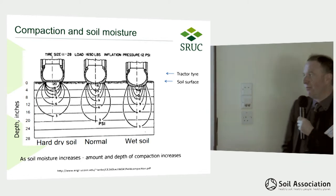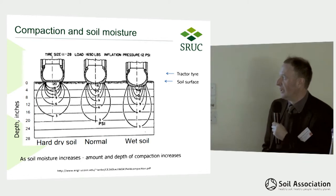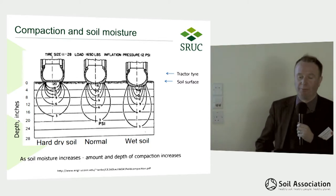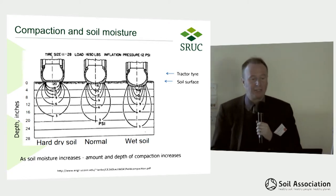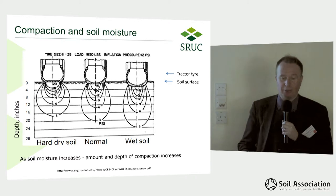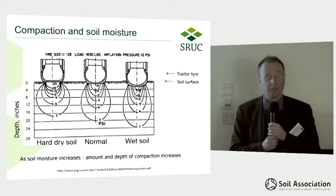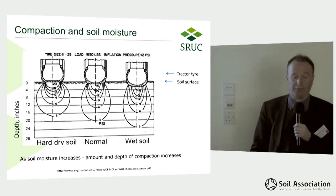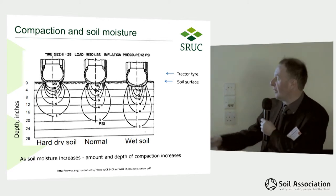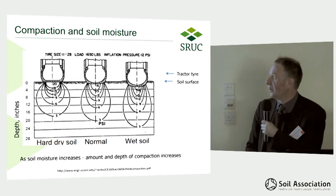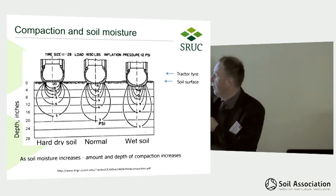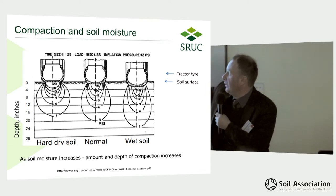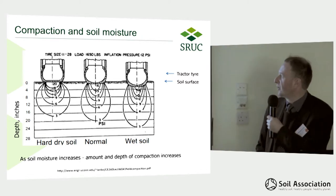With soil compaction, one of the most important things to think about is that as the soil gets wetter it's more prone to becoming compacted. Dry hard soils are harder to compact, but as the soil wets up and gets closer to field capacity this is where you get the potential for soil compaction to occur. As you can see in this diagram, the same weight, the same size of tractor, the same tractor wheel — you're getting a larger zone of compaction deeper into the soil as well as a more pronounced depression at the soil surface.